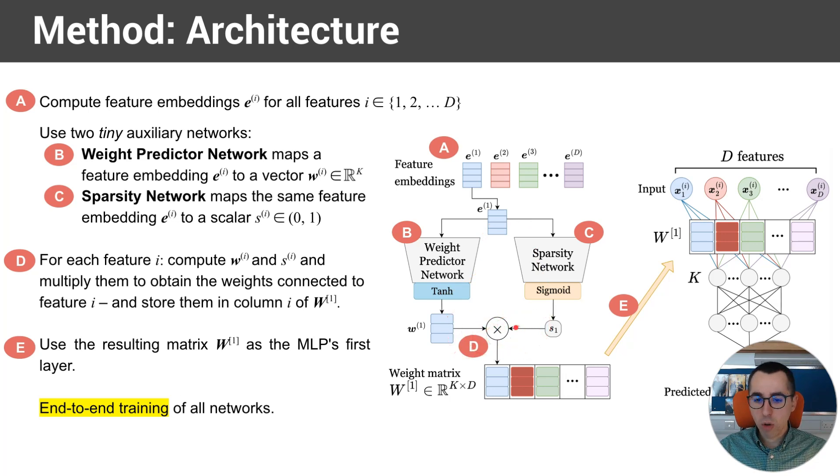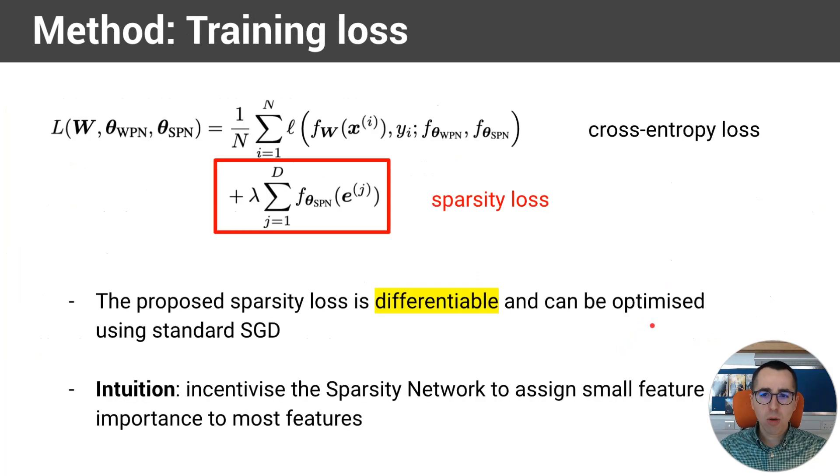And the resulting vector is put into the column of the weight matrix. So we take the first feature embedding, transform it, put it in the first column. Second feature embedding, transform it, putting it into the second column. The intuition is that, for example, the second column represents the connection of the second feature with the following hidden neurons. This method is end-to-end trained. In terms of the loss on top of the standard cross-entropy, we add a sparsity loss. It's a very simple loss in which we just add the outputs of the sparsity network.